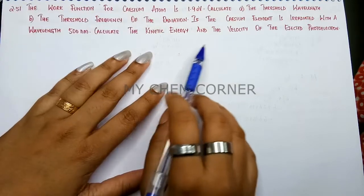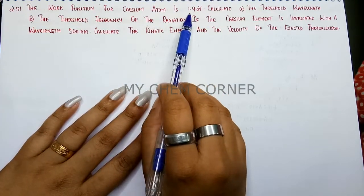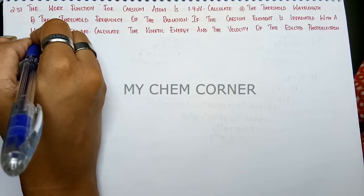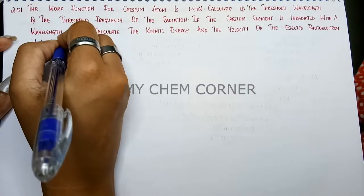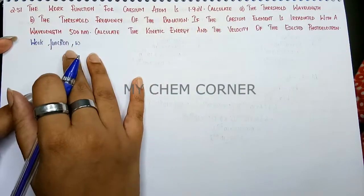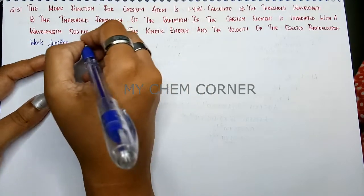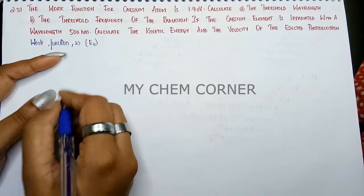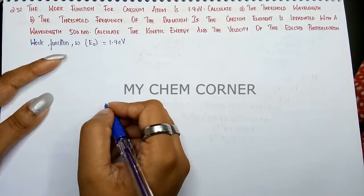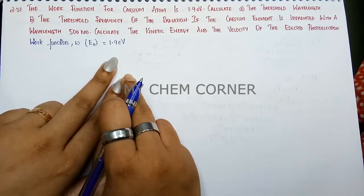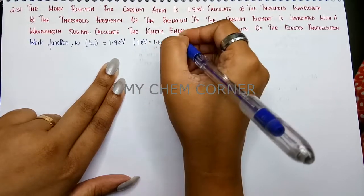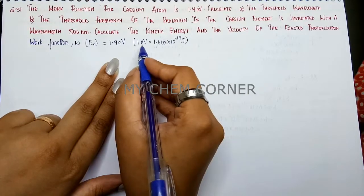Because our entire problem in this chapter deals with energy in joules, the first thing we will do is convert the electron volt to joule. The work function, represented as W or E₀, is 1.9 electron volt. We need to convert it to joules. Remember that 1 electron volt is equal to 1.602 × 10⁻¹⁹ joules.